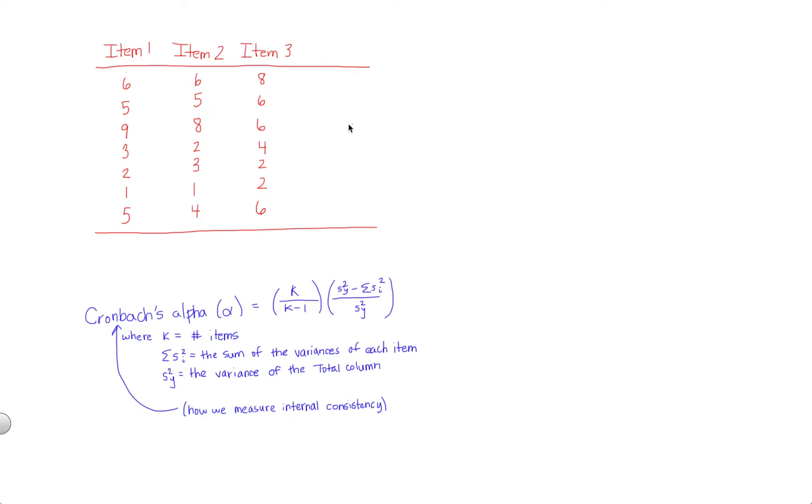So internal consistency allows you to assess that. The way we measure internal consistency is called Cronbach's alpha. This is the actual calculation we'll do to put a number on this idea of internal consistency, and here's the formula.